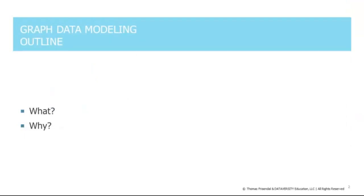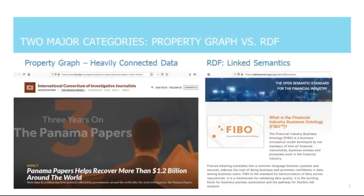The first dimension is the Outline of graph data modeling — basically the 'what' question and the 'why' question. The 'what' is a little bit muddy, not a clear picture. It reminds me of the database landscape in the 70s and 80s — not a clear picture, but trends are emerging and some standards are coming out. There are two major parts of the graph area: one is called Property Graph and the other is called Semantics.